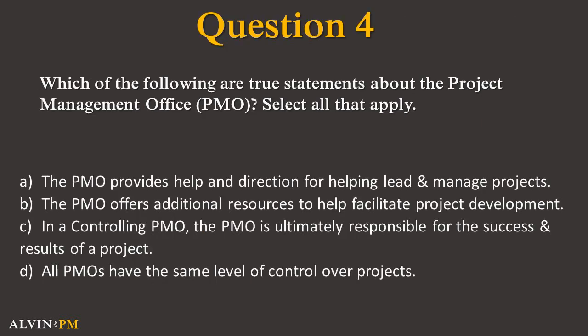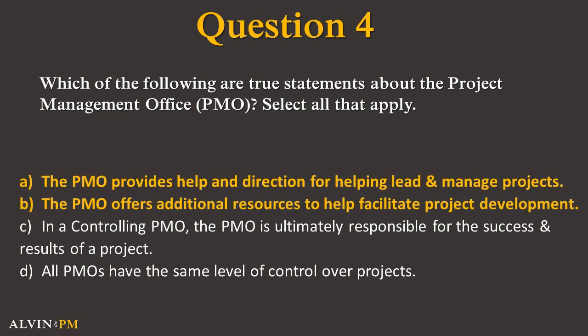Question 4. Which of the following are true statements about the project management office? Select all that apply. A. The PMO provides help and direction for helping lead and manage projects. B. The PMO offers additional resources to help facilitate project development. C. In a controlling PMO, the PMO is ultimately responsible for the success and results of a project. Or D. All PMOs have the same level of control over projects. The correct answers are A and B. Through process of elimination, only with a directive PMO is the project success ultimately held responsible by the PMO. And lastly, all PMOs do not have the same level of control over projects.